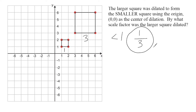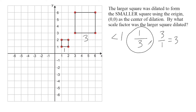Now, let's say that you were dilating the smaller square to form the larger square. Then you would just take this scale factor and write its reciprocal, which would be three over one, equal to three. But that's not what we're doing with this problem, so one third is our answer.